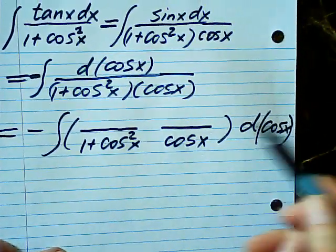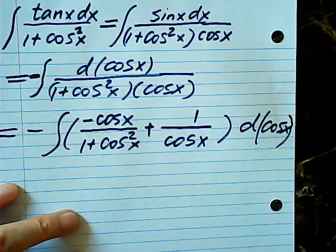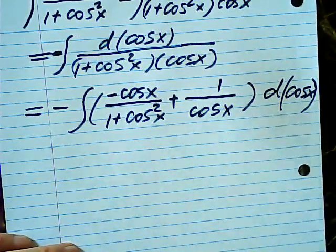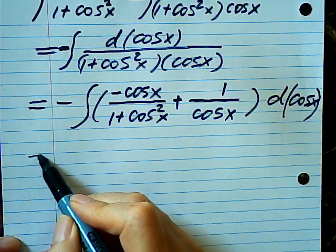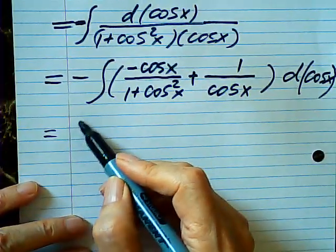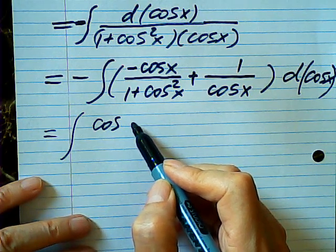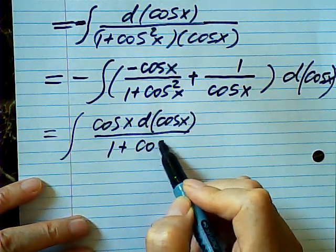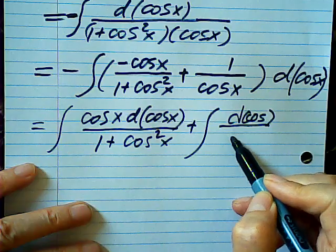Now, I suppose you know how to deal with partial fractions, right? So this ends up with negative cosine x and 1 plus — I'll skip the detail for partial fractions. Then this equals 2: one part is cosine x d(cosine x) over 1 plus cosine squared x, and the other is d(cosine x) over cosine x. Both of them can be very easily done.